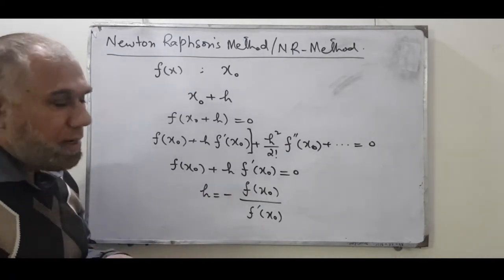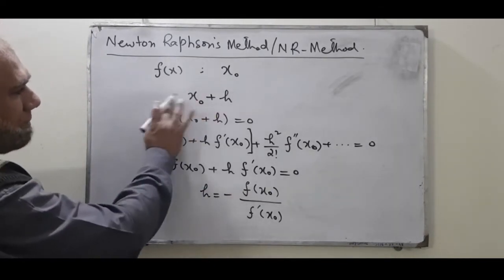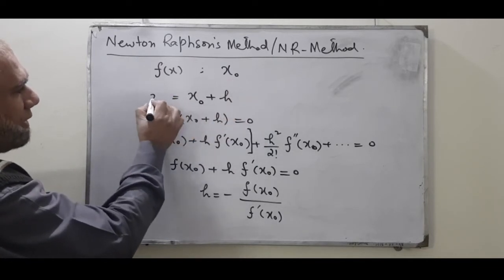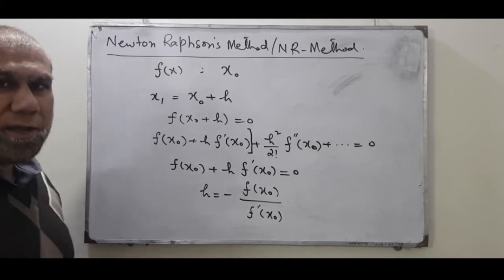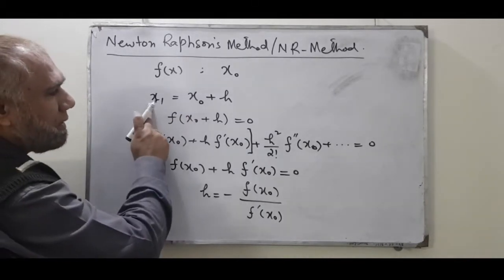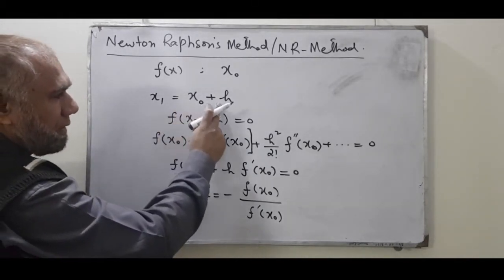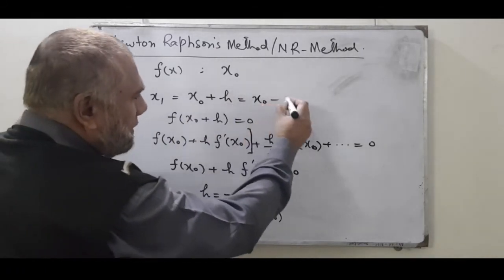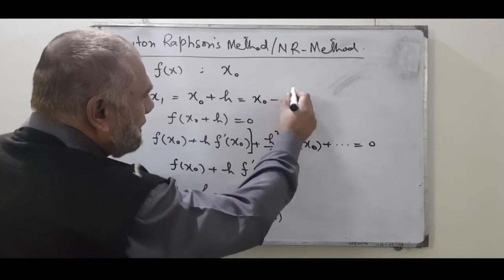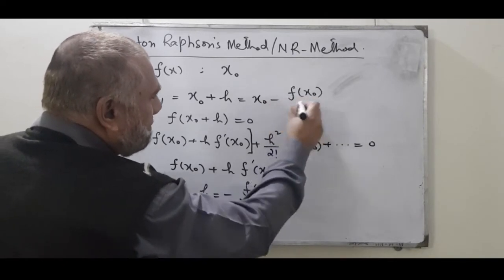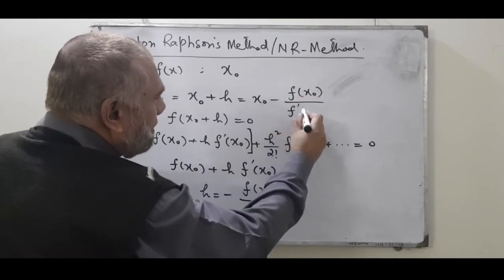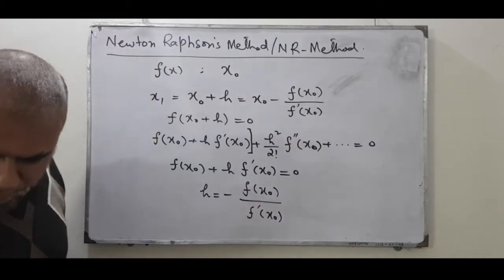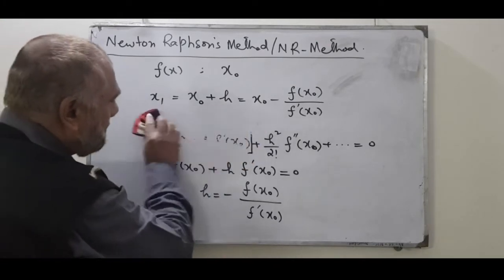If we call the next approximation x₁, then x₁ equals x₀ plus h. Replacing h by the quantity we derived from the Taylor series, the result takes the form x₁ = x₀ minus f(x₀) over f′(x₀).